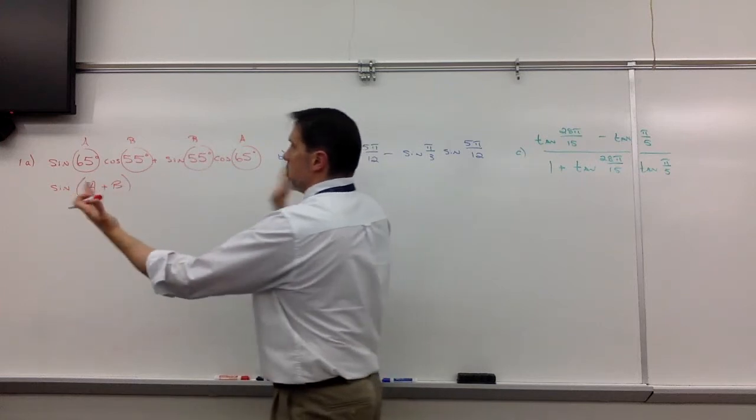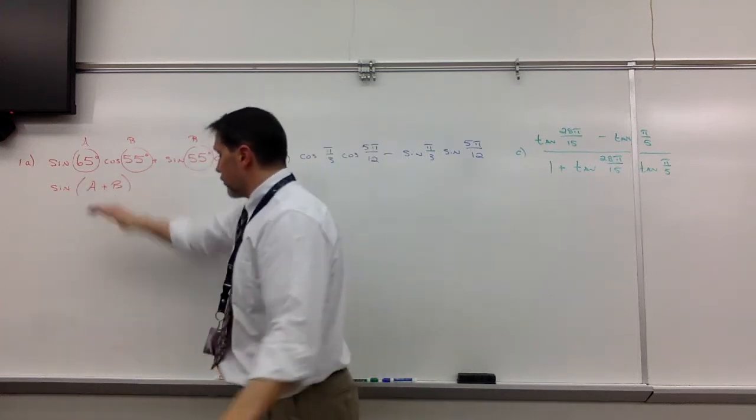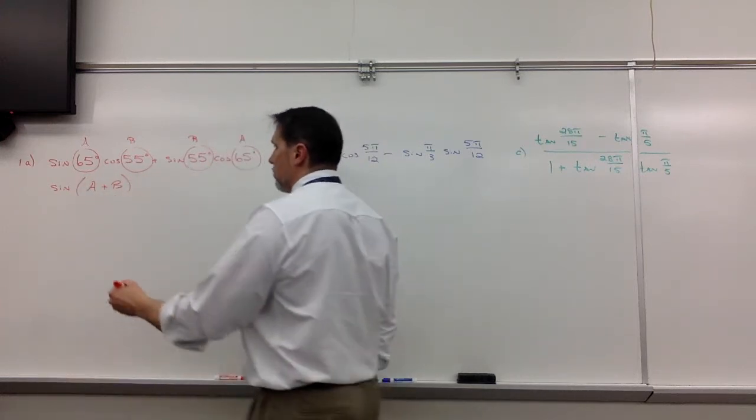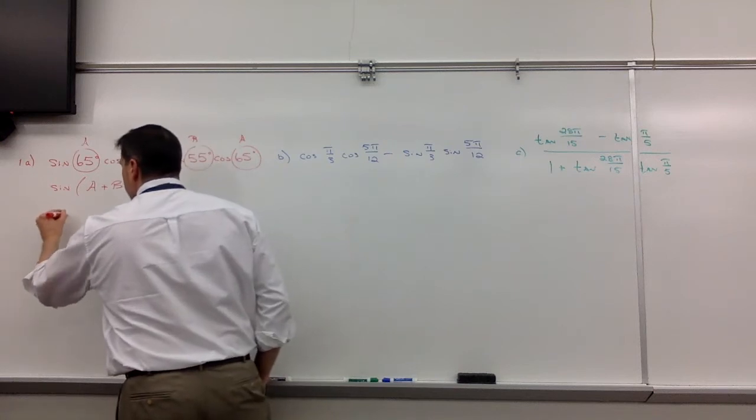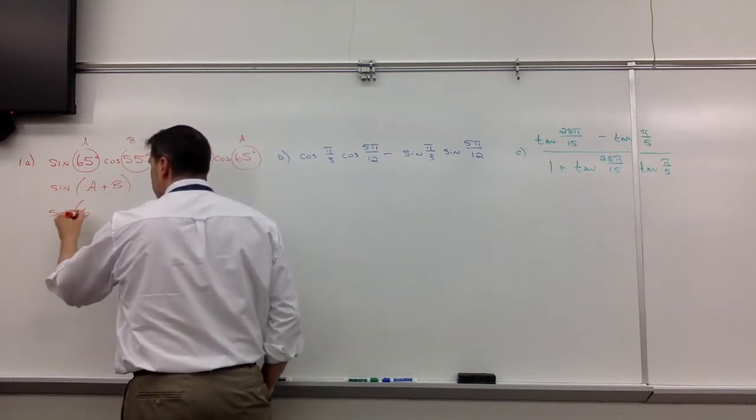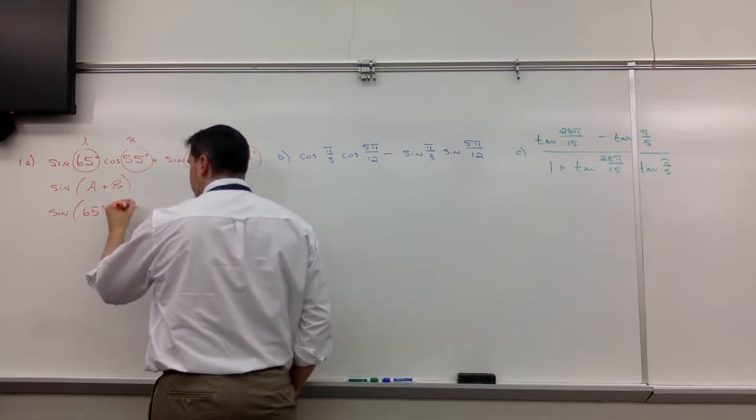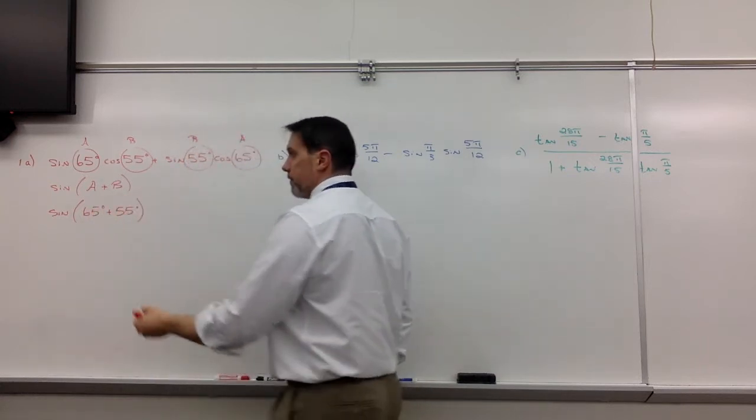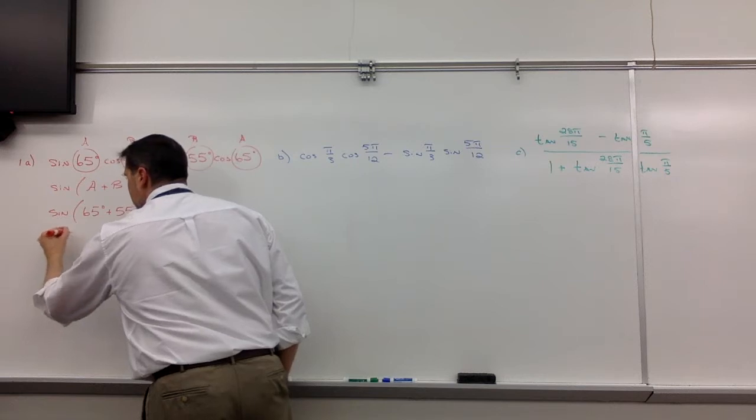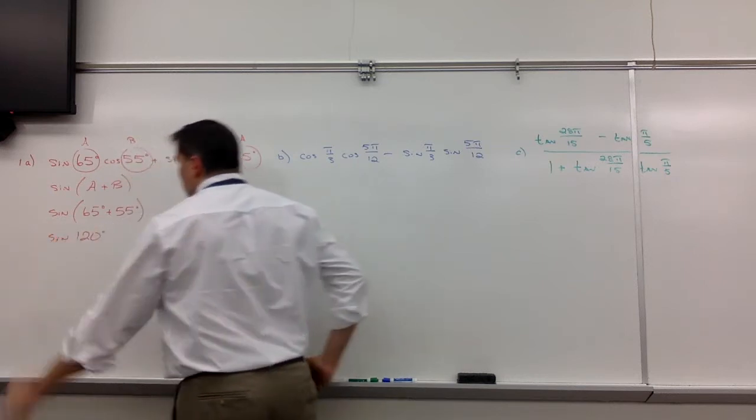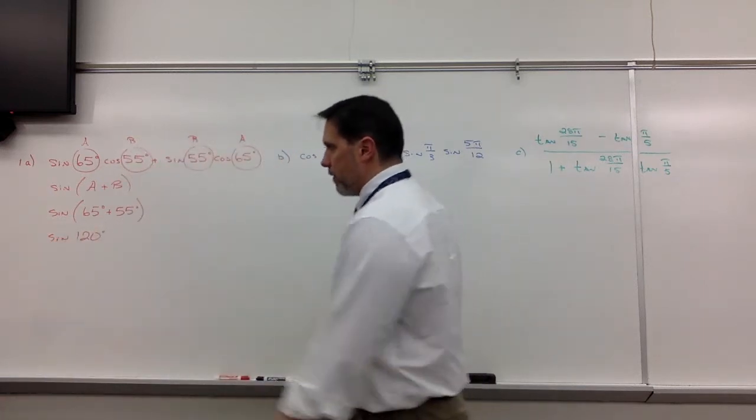So what we're doing is we're taking this back and condensing it into this format, but we're not going to say A and B. We're going to say 65 and 55. So you had 65 and 55, you get 120. And then we just ask ourselves, okay, what's the sine of 120?